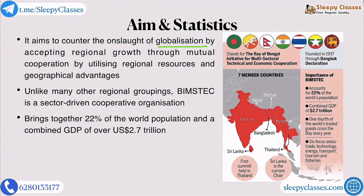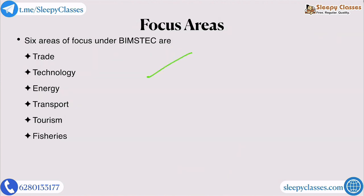BIMSTEC operates in six sectors and has 14 areas of cooperation. BIMSTEC countries represent 22% of the world's population and contribute 2.7 trillion dollars to the global GDP. As seen in the infographic, the six sectors are: trade, technology, energy, transport, tourism, and fisheries. Sri Lanka is the current chair of BIMSTEC from 2018 onwards.